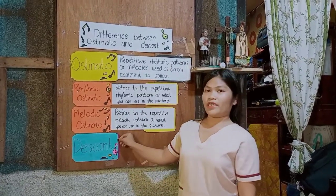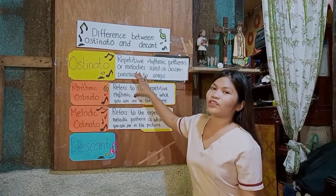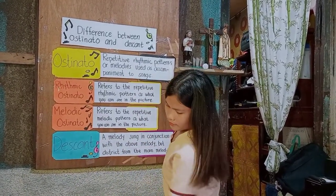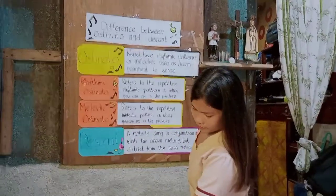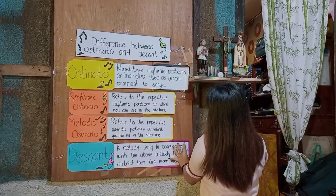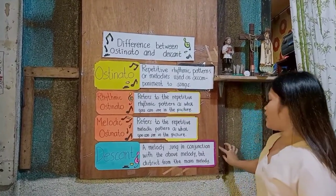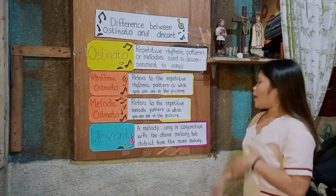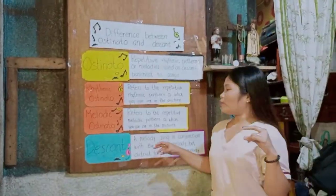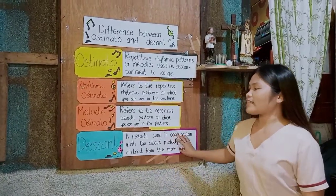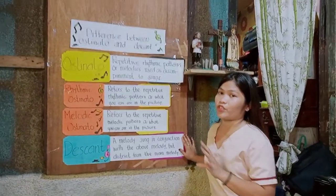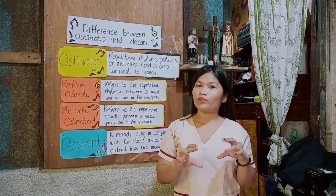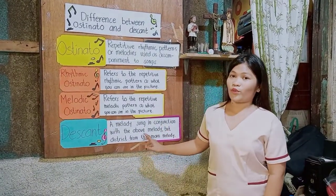Now the last topic is about descant. So after ostinato, we move on to descant. Descant is a melody sung in harmony with the main melody, but distinct from the main melody. It is what we call melody upon melody. If you produce a song, it has a descant. Descant is part of texture — it helps identify the thickness or thinness of a musical piece.